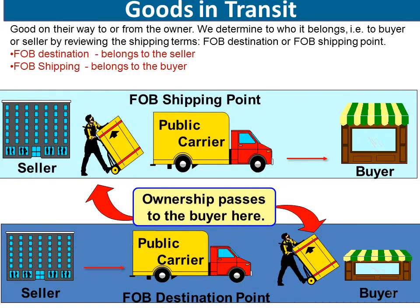Goods in transit are goods that a store has ordered from abroad and is waiting to receive — goods on their way to the owner. We need to determine the ownership of these goods: do they belong to the buyer or the seller? To determine ownership we review the shipping terms. We have two shipping terms agreed upon between buyer and seller: FOB destination and FOB shipping point. Under FOB shipping point, once the goods are released from the seller's place and reach the shipping point, the goods now belong to the buyer.